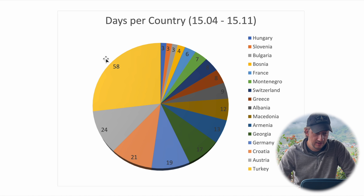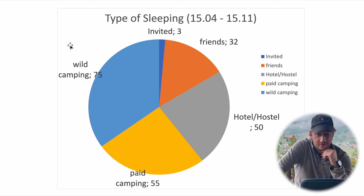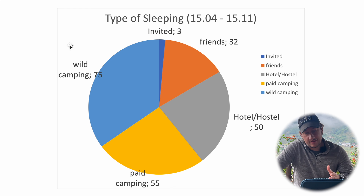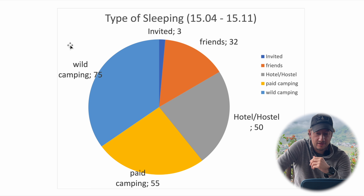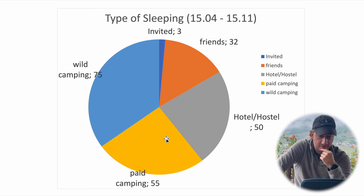Next is all the places I slept over these seven months. I was invited three times by people I didn't know, and I slept at friends' places 32 times. That's quite a lot — so thank you to everyone who invited me, provided food, and showed hospitality. That definitely helped me get started and made it possible to go from one friend's place to the next, which was really nice especially in the beginning.